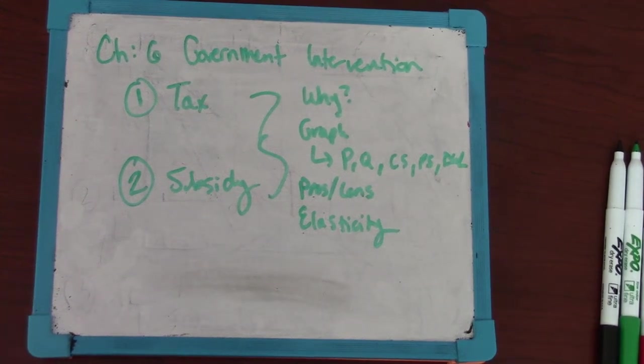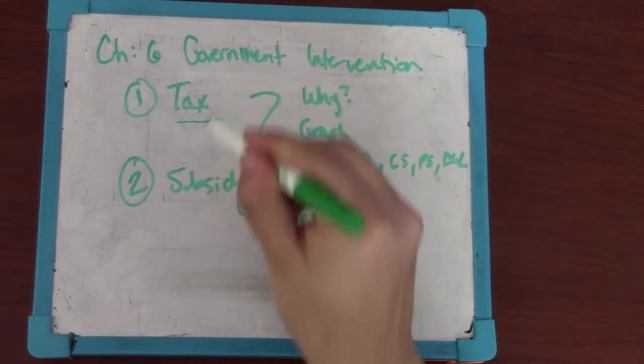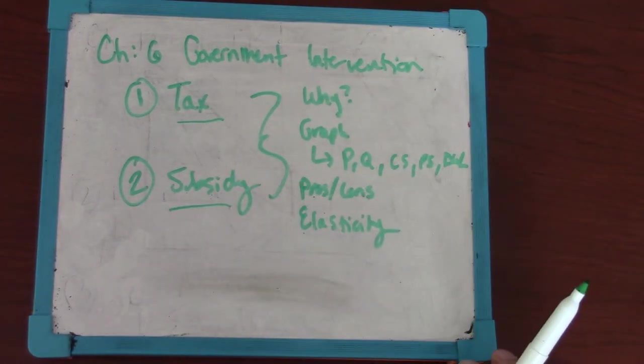Here's a video on Chapter 6 discussing government intervention. I'm going to discuss two different policies in this video: the first one is a tax and the second is a subsidy.